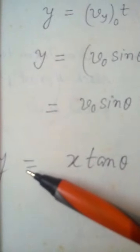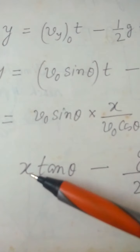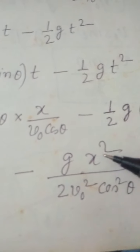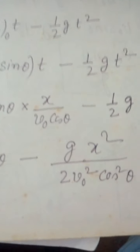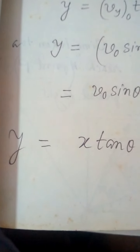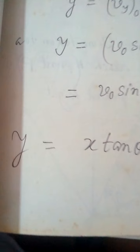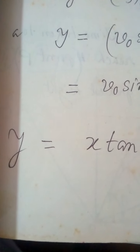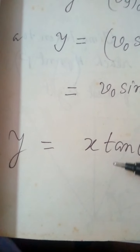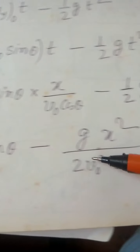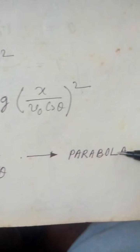You can see this is a parabola because y is expressed in terms of x², which is the form of a parabola. You can find the focus, directrix, and apex using coordinate geometry. So this equation represents the parabolic path of the projectile.